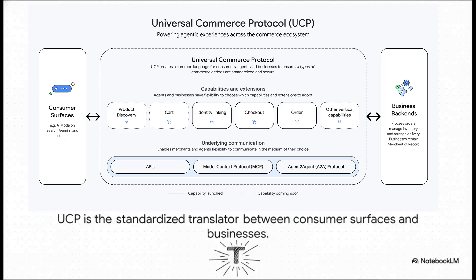This diagram pulls it all together. On the left, you've got the consumer surfaces — that could be an AI chat in search or another app. On the right, you have the business backends, the store's actual inventory and payment systems. UCP is that powerful translator in the middle — the standardized layer that lets them speak the same language using a shared set of capabilities like checkout, discounts, and finding products.